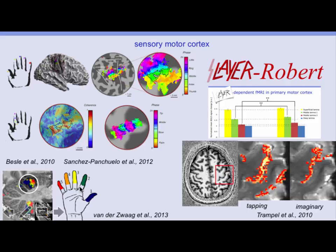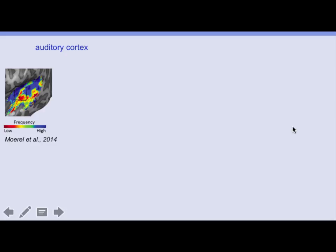The first layer-dependent fMRI in motor cortex was done by Robert Trampel. He had participants do actual finger tapping and also imagine finger tapping without moving muscles. In both cases he sees a significant BOLD signal increase and a gradient of reduced activity across cortical depth. For the two conditions he sees a slightly different slope of that gradient, suggesting different input-output activity.